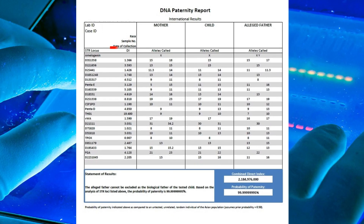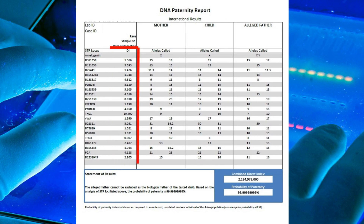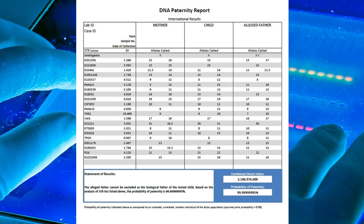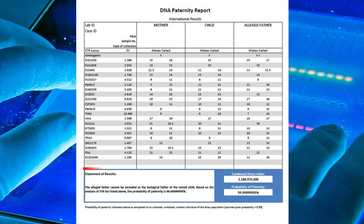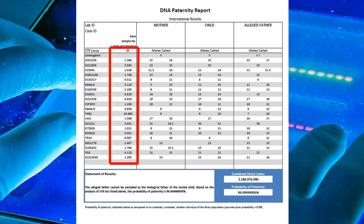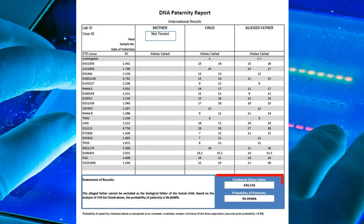A paternity index (PI) or direct index (DI) is calculated based on information including the portion of the male population that has this size allele. This index is included in the PI or DI column for each DNA locus. A combined paternity index or combined direct index for all of the tested alleles is then calculated and written in bold type below the chart, along with the probability of paternity.